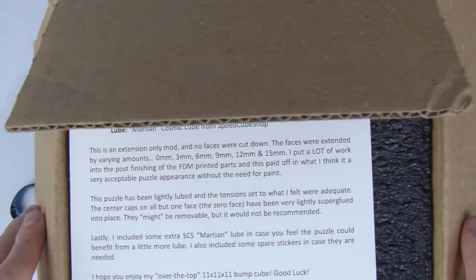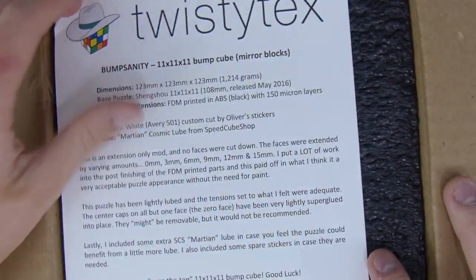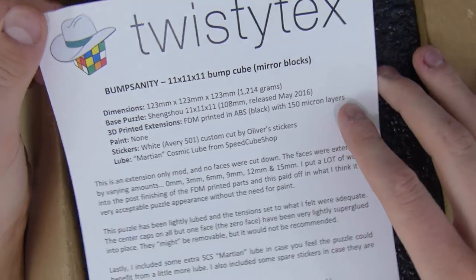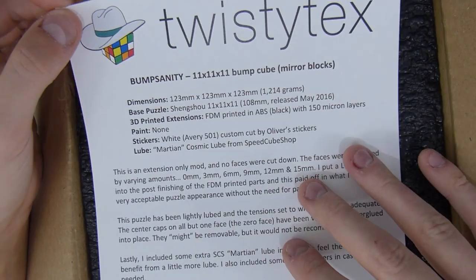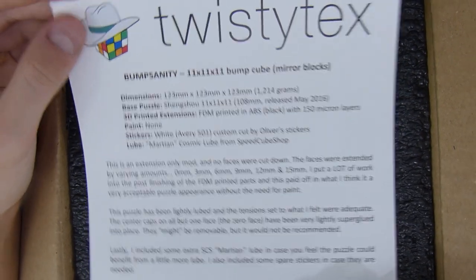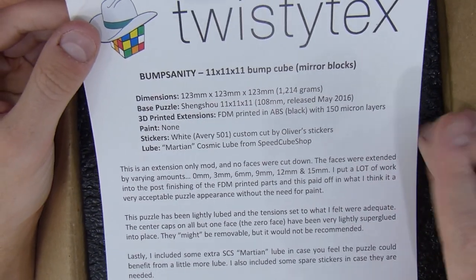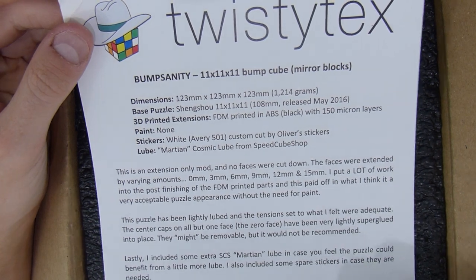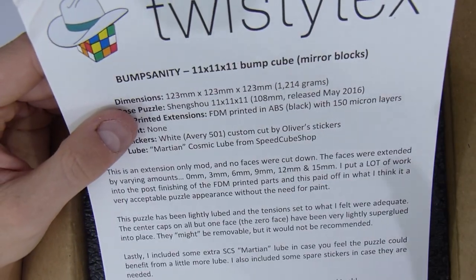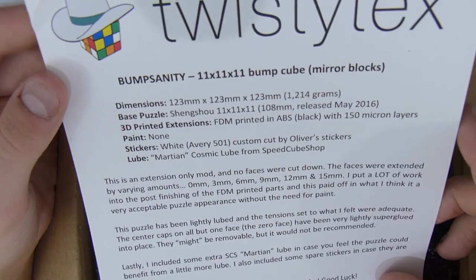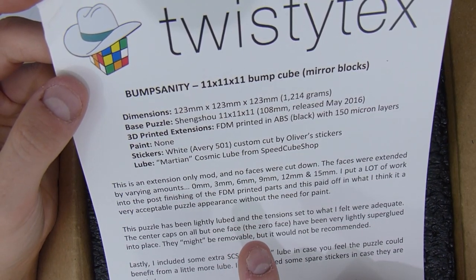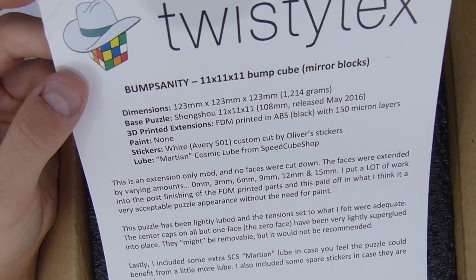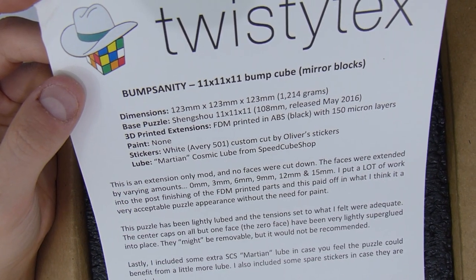And as always, this beautiful paper explaining what this puzzle is. So the Bump Sanity, or 11x11x11 Bump Cube, dimensions 123mm, so that's pretty big. With a Shang-Shi 11x11 FDM printed extensions, and I'm pretty sure it's filled and as perfect as last time.